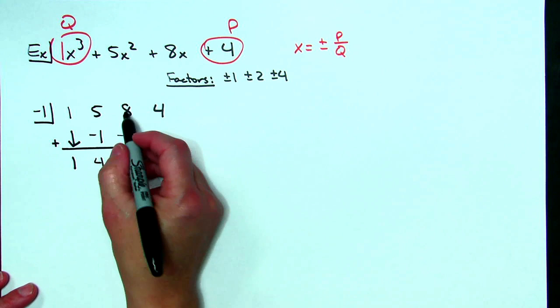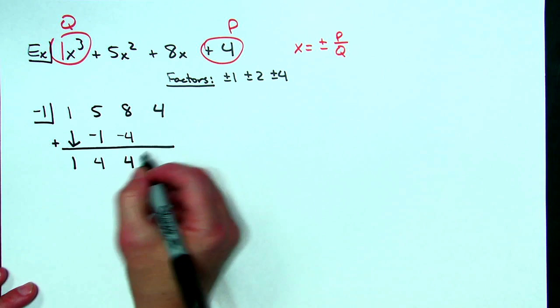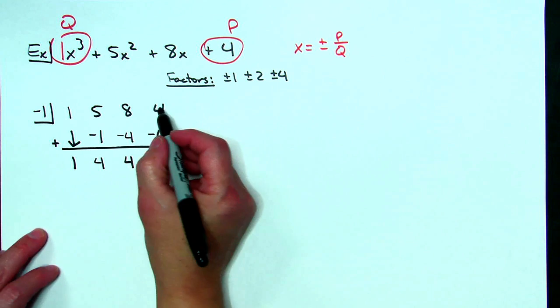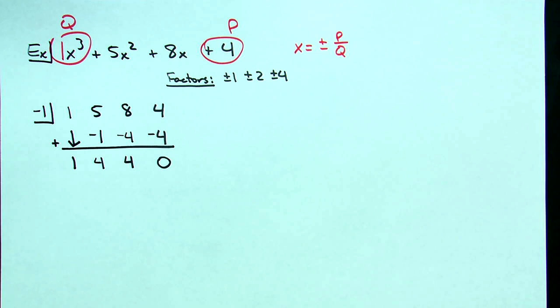Eight plus negative four is four, four times negative one is a negative four, four plus a negative four is zero. It looks as though I got lucky on this one.